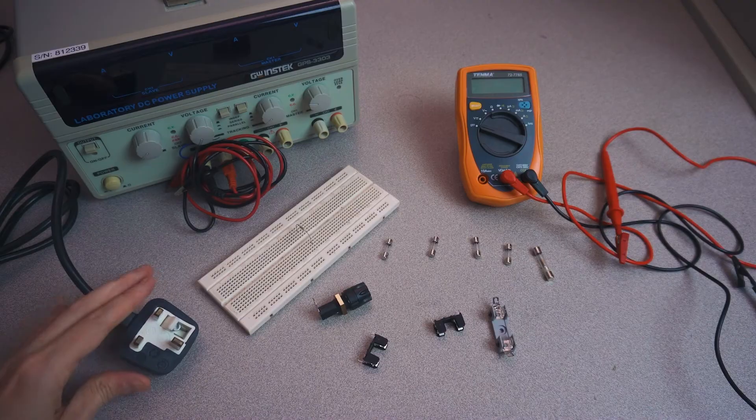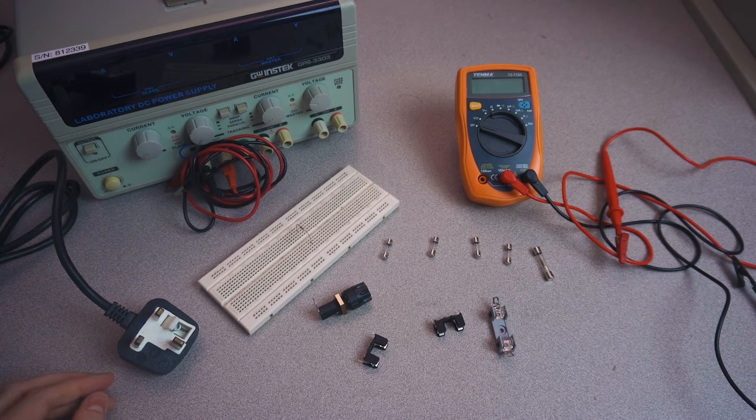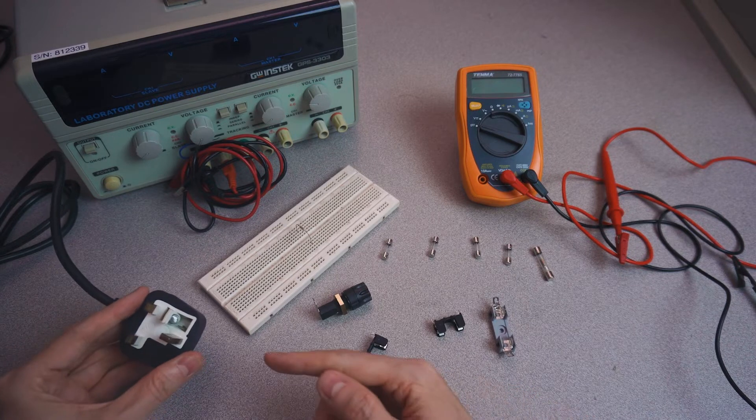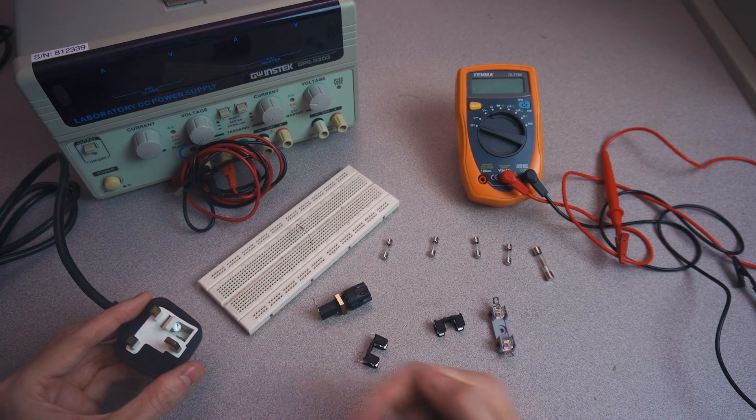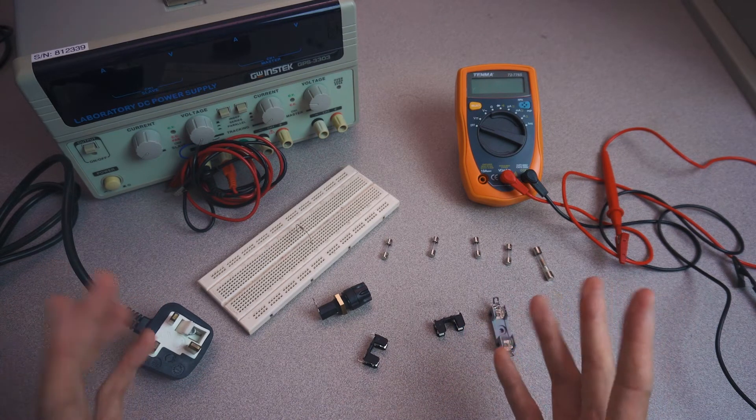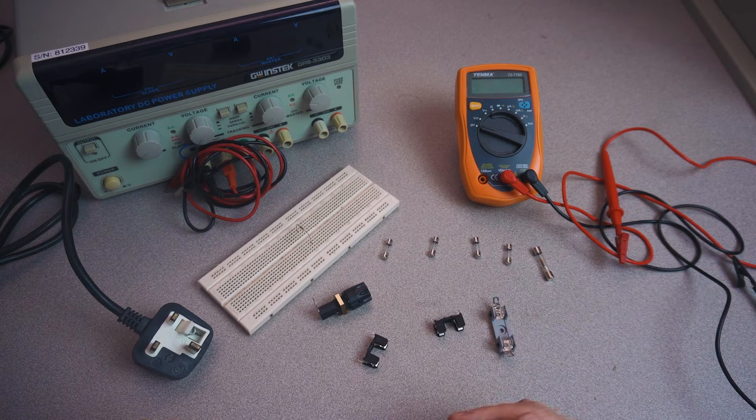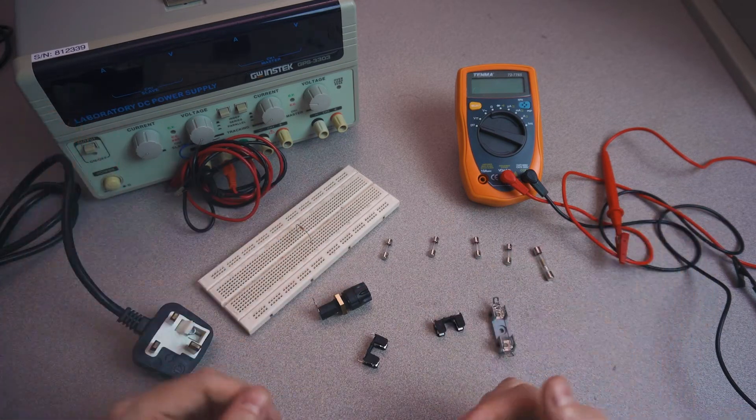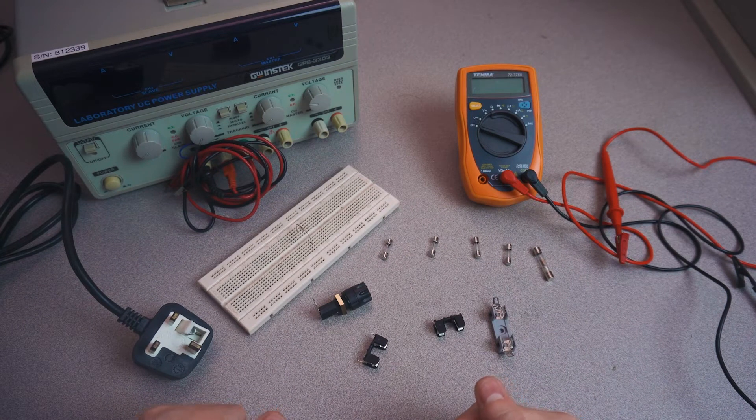Fuses are always installed on the high side of a circuit, or the hot side. In this plug, the fuse is installed with respect to the high side rather than from the ground. If a circuit has a fault condition, you want to make sure that the fuse will remove the hot connection from the rest of the circuit rather than remove the ground, which could be very dangerous.